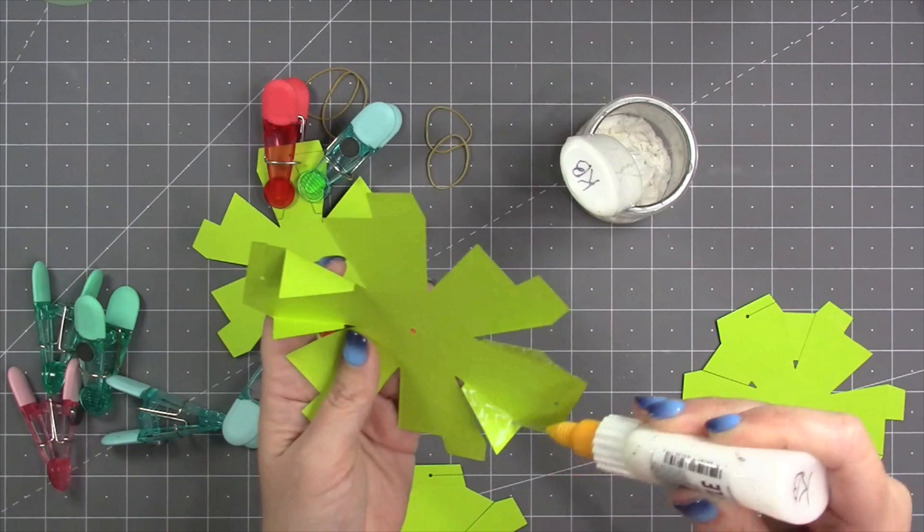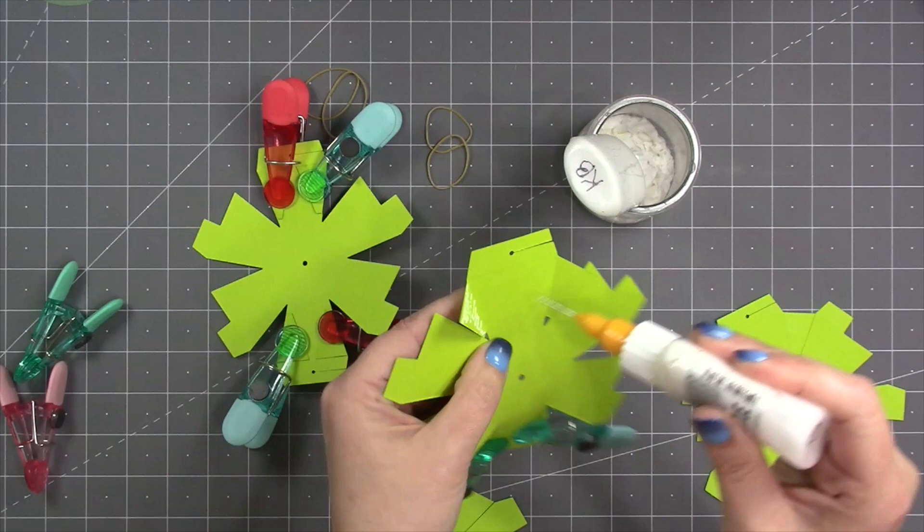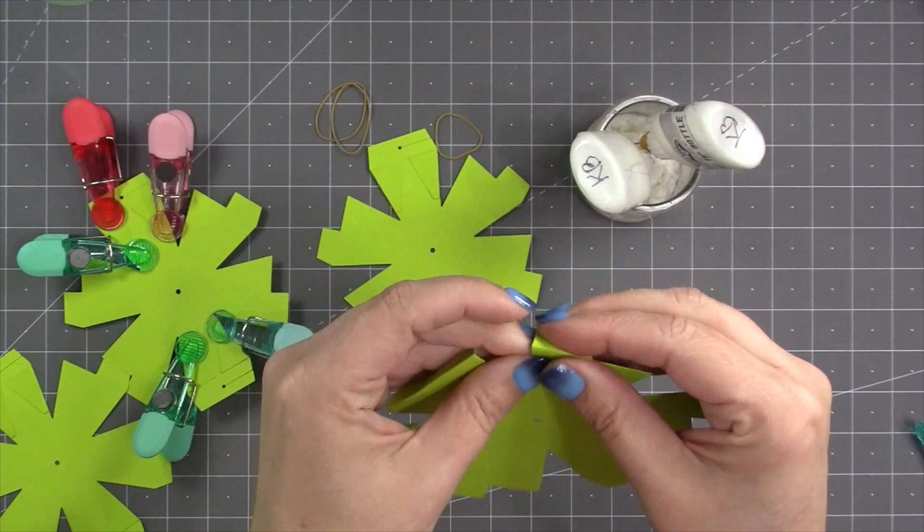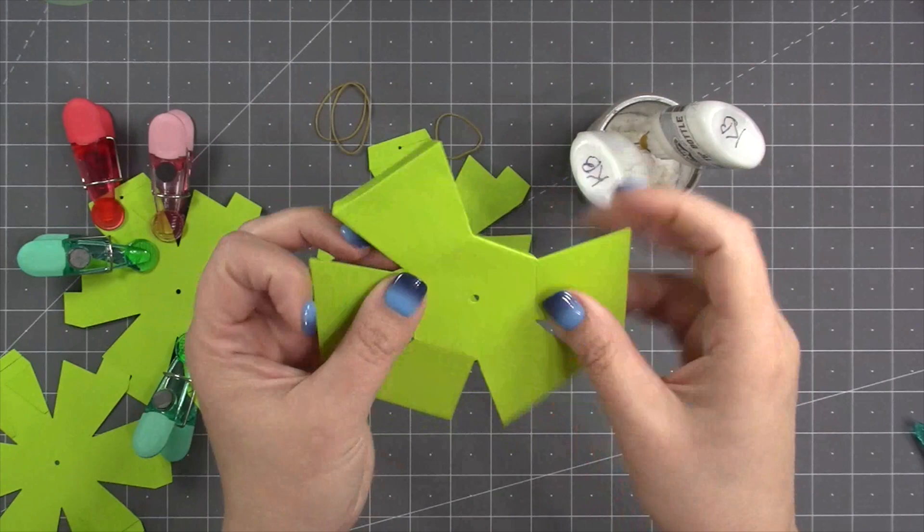There are four little reinforcing tabs on each of the pieces that need to be glued down on the back. I like to use my Lineco neutral pH adhesive in my fine tip bottle, and I'm a fan of just clipping those so that I don't have to hold them.